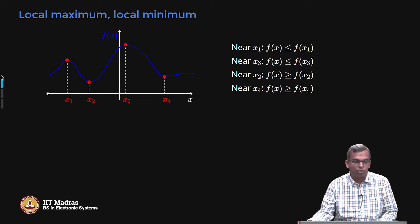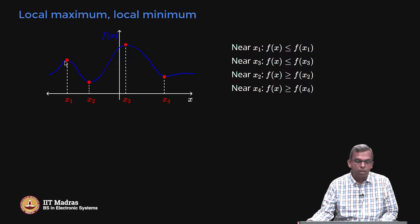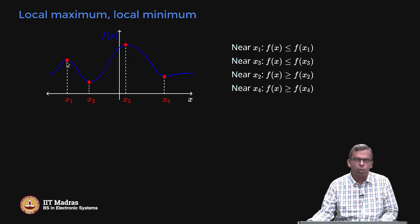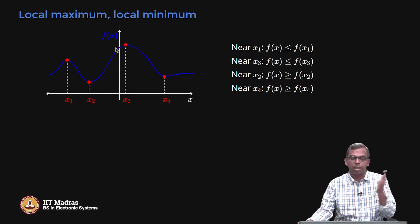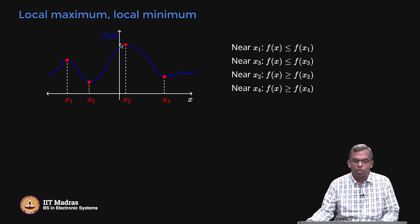Going back to our standard function example, there are points marked as x1, x2, x3, x4. Near x1, f(x) is less than or equal to f(x1) — so this is a peak, a local maximum. Similarly, near x3, f(x) is less than or equal to f(x3), so that is also a local maximum. Why local and not global? Because x1 may be a local maximum only, whereas x3 appears to also be the global maximum — the overall maximum value.